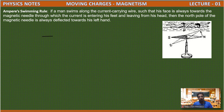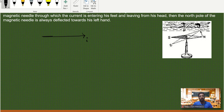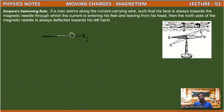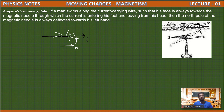Let us take the swimmer swimming along the direction of current. The swimmer is swimming in this direction, along the direction of current. When we place a magnetic needle beside him, the north pole of that magnetic needle deflects towards his left hand. So here the magnetic field goes clockwise if you see from this side. From the left hand side it is clockwise, and if you see from the right hand side it is anticlockwise. The direction of his left hand gives the direction of magnetic field.